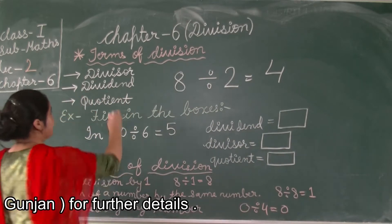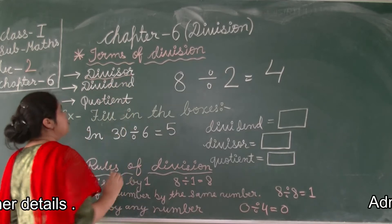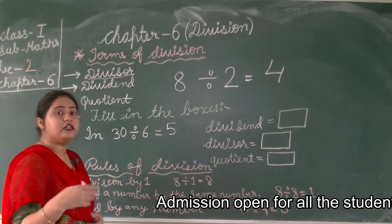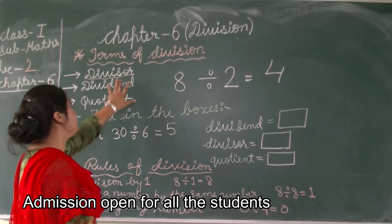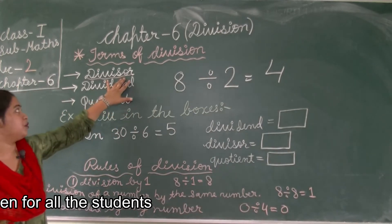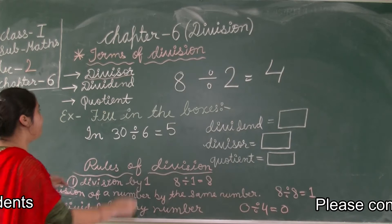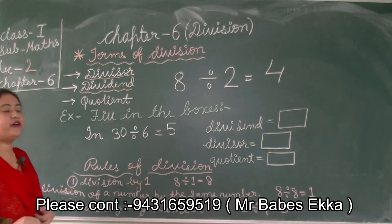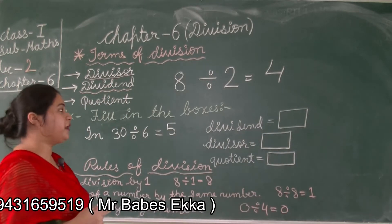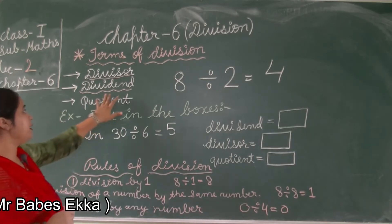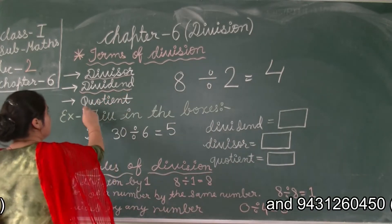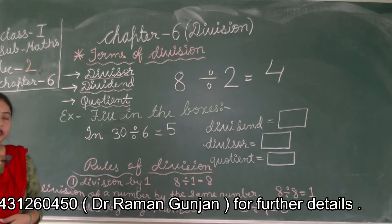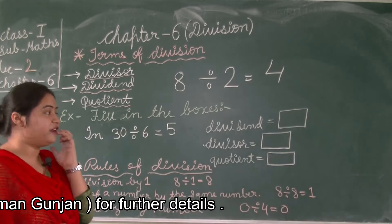The first term is dividend. Dividend means the number that is being divided — the number which is divided by another number. The second term is divisor, which is the number from which another number is divided. And quotient is our answer — the result we get after division.